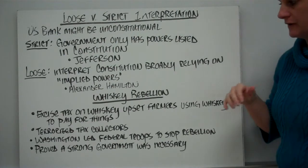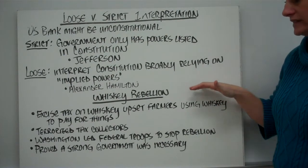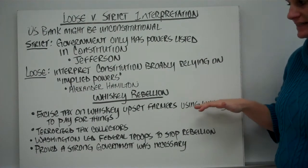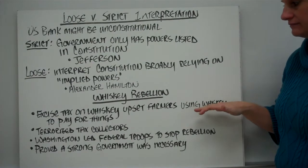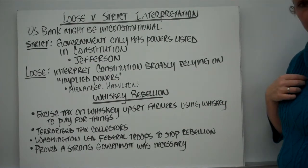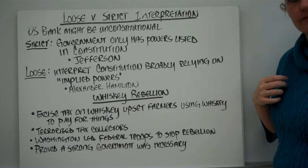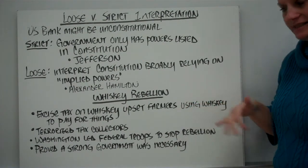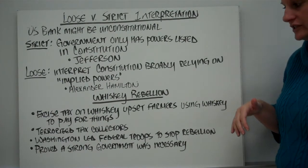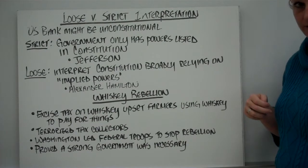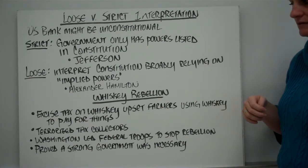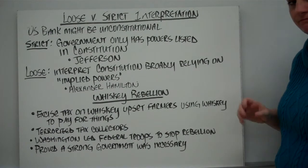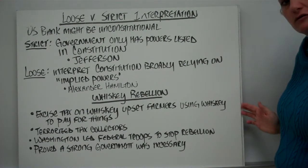One of the first challenges the federal government faced was the Whiskey Rebellion. The federal government put an excise tax on whiskey, which upset farmers who used whiskey to pay for things. The farmers terrorized the tax collectors, so Washington led federal troops to stop the rebellion. This proved that a strong government was necessary — it was the first true challenge of the federal government.